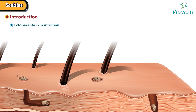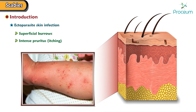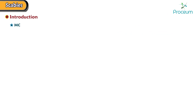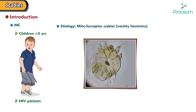Scabies is an ectoparasite skin infection characterized by superficial burrows, intense pruritus or itching, and secondary infection. It's more common in children of less than 5 years of age and HIV patients. It's caused by a mite called Sarcoptes scabiei, variety hominis.